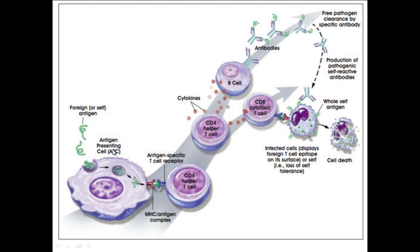What happens is those antigens are then presented by the phagocyte on its surface — represented by this part of the diagram here. This green bit represents the antigen that was on the pathogen, and then it shows that to a relevant T cell.